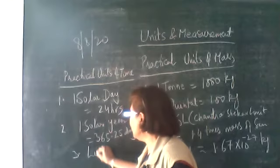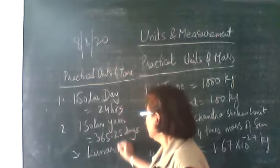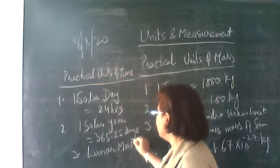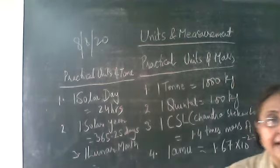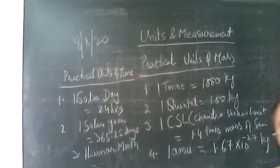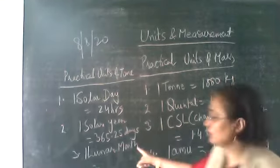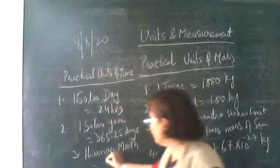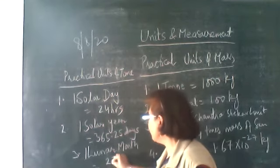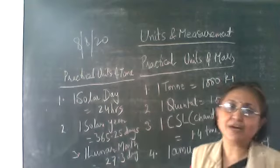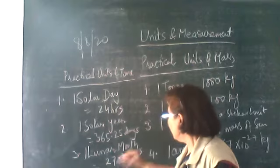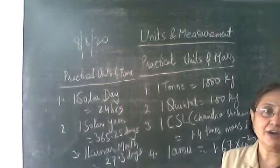Another unit is the lunar month. Some calendars are based on the lunar month, which is the time taken by the moon to complete one revolution around the earth. One lunar month is equal to 27.3 days.